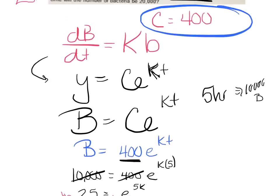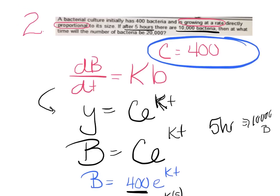Now, I don't think I'm done there. They didn't say what is the constant. They said then at what time, so my question is find the time, will the number of bacteria be 20,000?